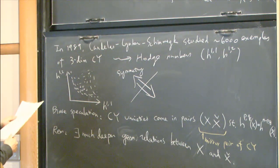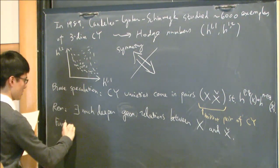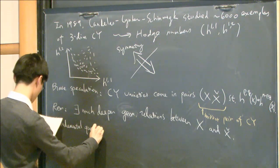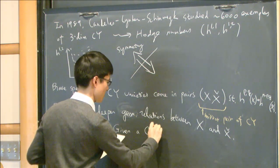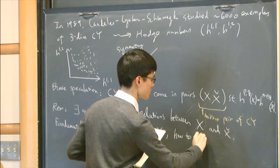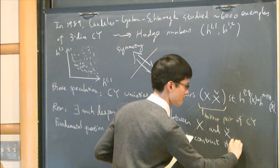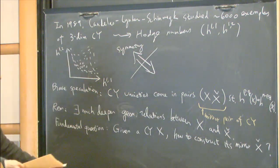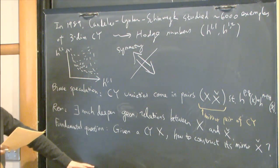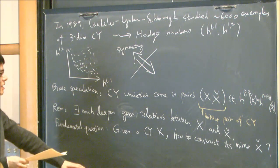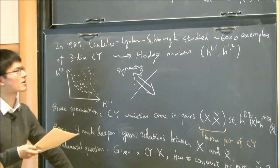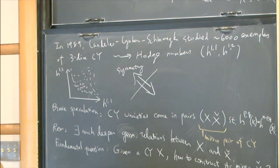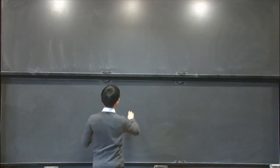A fundamental question is: given a Calabi-Yau variety X, how do we construct its mirror X̌? Various special cases have been studied by Batyrev-Borisov and Gross-Siebert. For the general case, we have a guiding conjecture by Strominger, Yau, and Zaslow, called the SYZ conjecture. Let me explain the idea of SYZ in the version enhanced by Gross-Wilson and by Kontsevich-Soibelman.